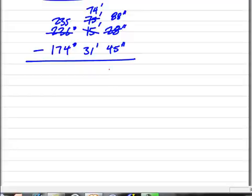88 minus 45 is going to give me 43 seconds. 74 minus 31 is going to also give me 43 but that's minutes now. And 235 minus 174 should give me 61 degrees. 61 degrees, 43 minutes, 43 seconds is the difference in those two angles.